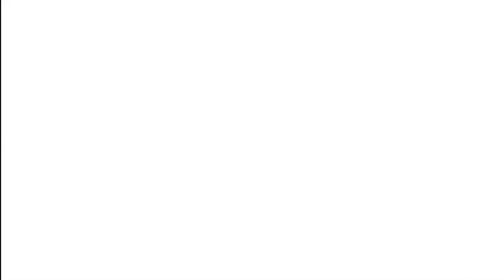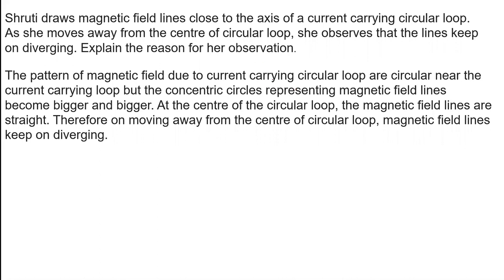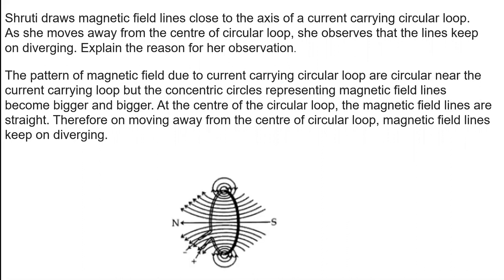Shruti draws magnetic field lines close to the axis of a current-carrying circular loop. As she moves away from the center of the loop, she observes that the field lines keep on diverging. Explain the reason. The pattern of the magnetic field due to a current-carrying circular loop — on the top and bottom they are concentric circles, but at the center of the circular loop the magnetic field lines are straight. Therefore, on moving away from the center, the magnetic field lines keep on diverging.